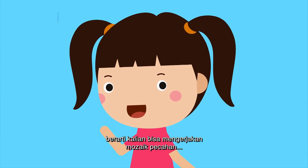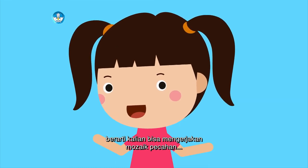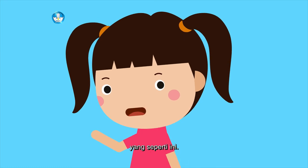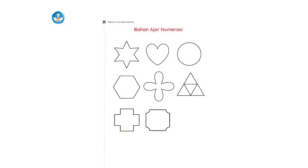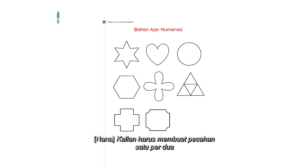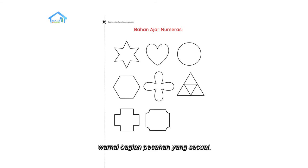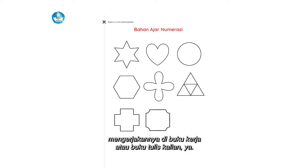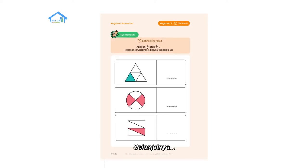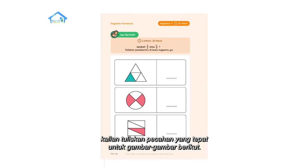Kalau sudah mengerti, berarti kalian bisa mengerjakan mozaik pecahan yang seperti ini. Kalian harus membuat pecahan satu per dua dan satu per empat, lalu warnai bagian pecahan yang sesuai. Mengerjakannya di buku kerja atau buku tulis kalian ya. Selanjutnya, kalian tuliskan pecahan yang tepat untuk gambar-gambar berikut.